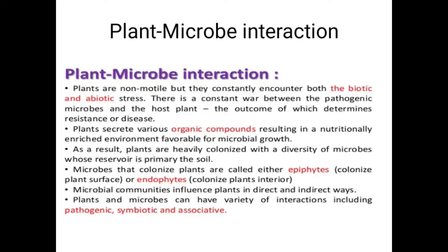ہم نے پڑھا کہ پلانٹ biotic اور abiotic stress face کرتا ہے۔ Pathogenic microbe اور host plant کے درمیان resistance یا disease کا نتیجہ آتا ہے۔ پلانٹس آرگینک کمپاؤنڈ سیکریٹ کرتے ہیں جو microbial growth کے لیے فیوریبل انویرنمنٹ دیتے ہیں۔ Microbes کا اور plants کا primary reservoir soil ہے۔ Microbial communities پلانٹس کو directly اور indirectly affect کرتی ہیں۔ تین relations ہیں: pathogenic، symbiotic، اور associative۔